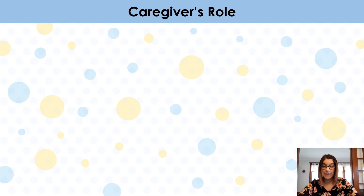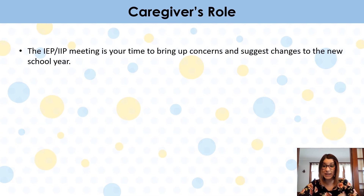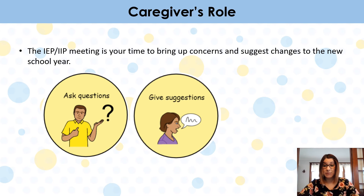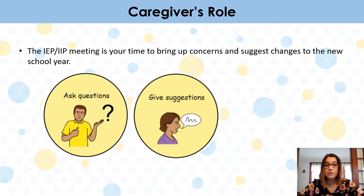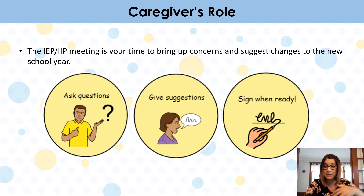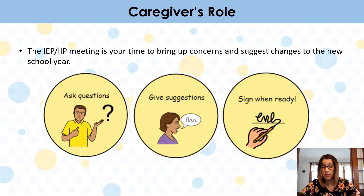Your role at the IEP or IIP meeting is really exciting — you are part of the team. You get to share your questions, give suggestions, and express whatever you need to during the meeting to make sure your child has a really good year at school. And then you sign the document when you're ready. If you want to take the document home, share it with your spouse, think things over, or have something changed on it — that is totally your right before signing.